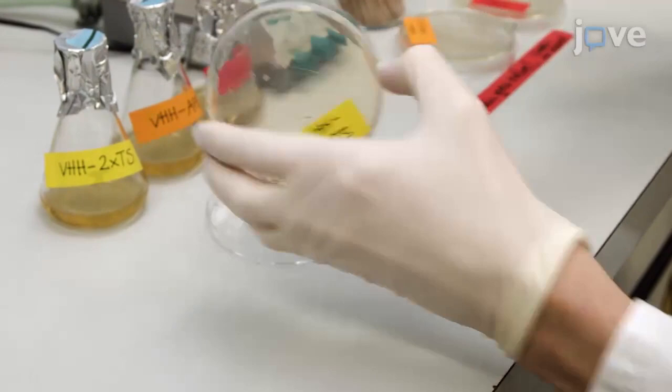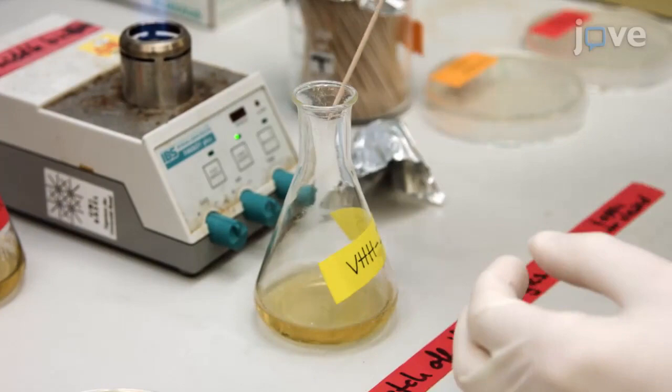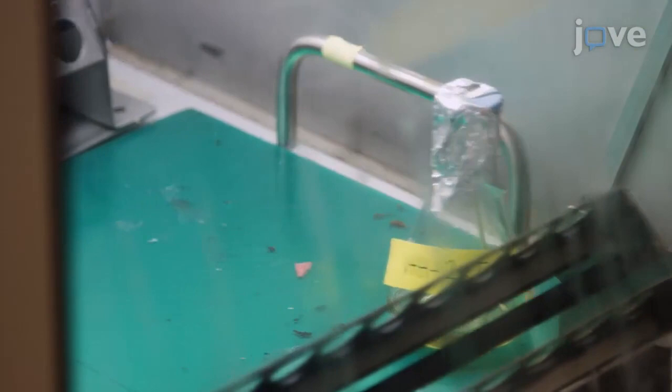To begin this procedure, pick a bacterial colony containing the vector of interest from the plate, and inoculate a flask containing 20 milliliters of LB medium supplemented with antibiotics. Incubate overnight at 37 degrees Celsius in a shaking incubator.